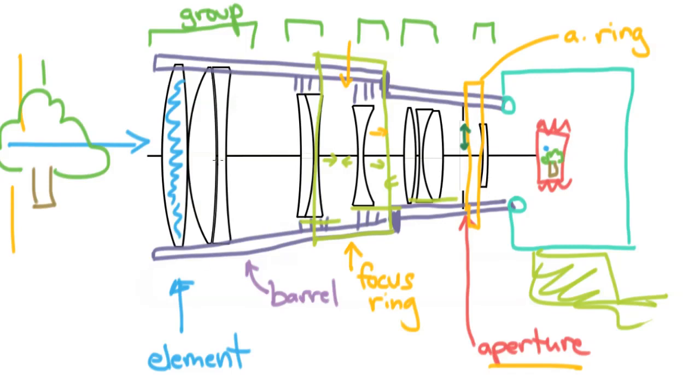So here you've got your elements, your groups, your barrel, your ring, your focus ring, your aperture, your aperture ring, all that stuff. And the only thing that I really want to tell you about before we move on to the next slide is about the lens coating.